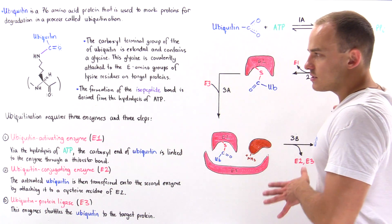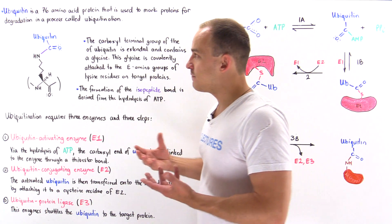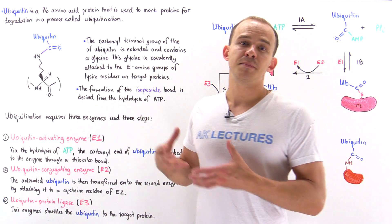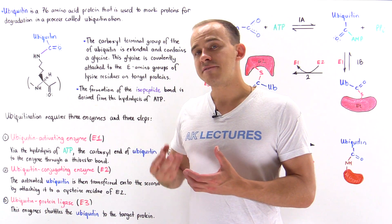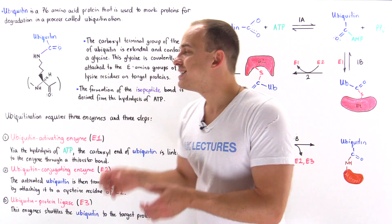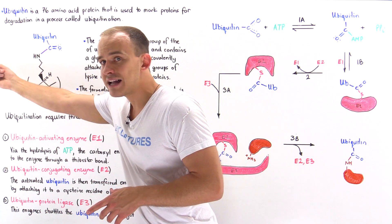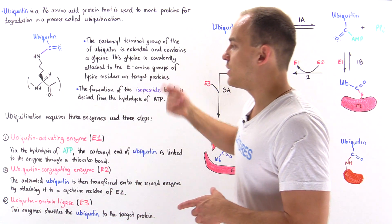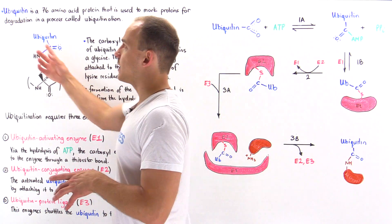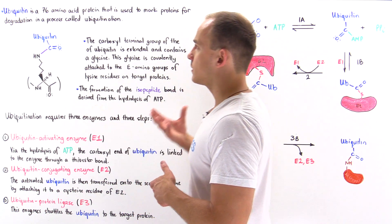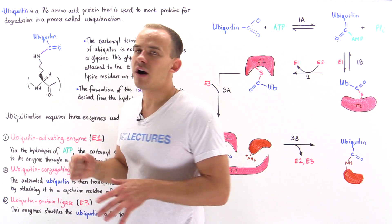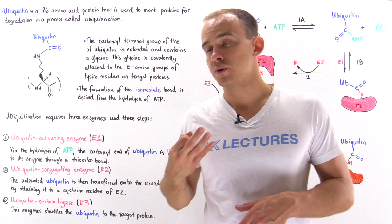As we'll see in a moment, the formation of this isopeptide bond is carried out by the hydrolysis of an ATP molecule. We have to hydrolyze an ATP molecule to gain enough energy to attach ubiquitin onto that target protein. The process of ubiquitination involves three different enzymes and three different steps.